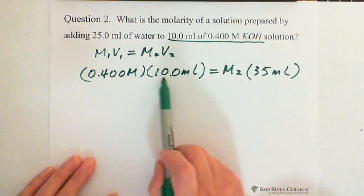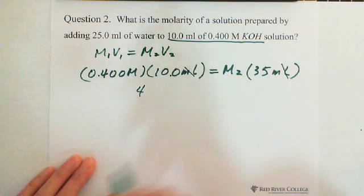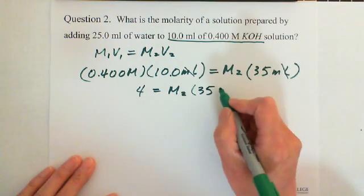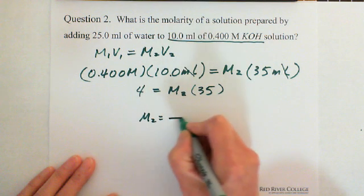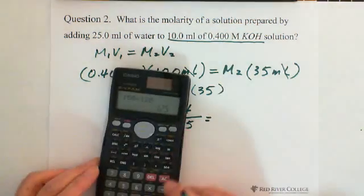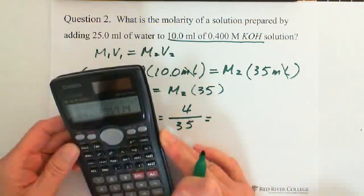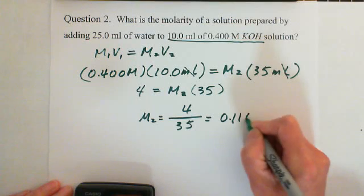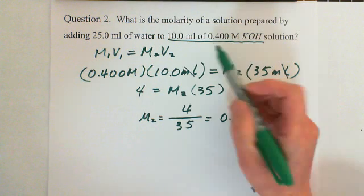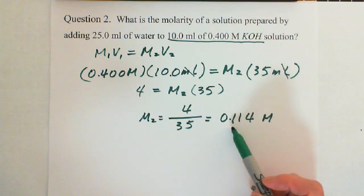So: 0.400 times 10 equals 4. Since milliliters cancel out, we have 4 equals M2 times 35. So M2 equals 4 divided by 35, which gives 0.114. The answer is 0.114 molarity. Since 0.400 molarity has three significant figures, the answer should also be expressed to three significant figures.